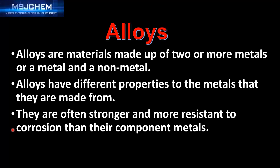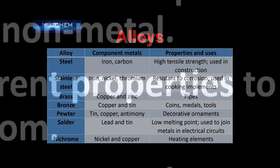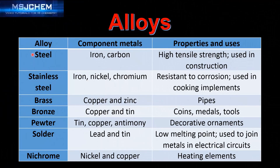So let's look at some examples of alloys. Steel is composed of iron and carbon, and it's used in construction. Stainless steel is composed of iron, nickel, and chromium, and it is resistant to corrosion.